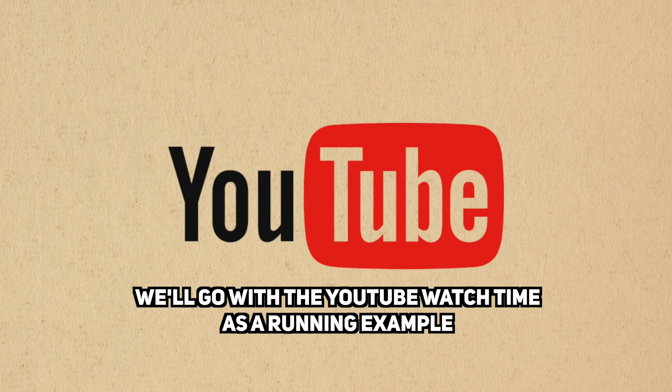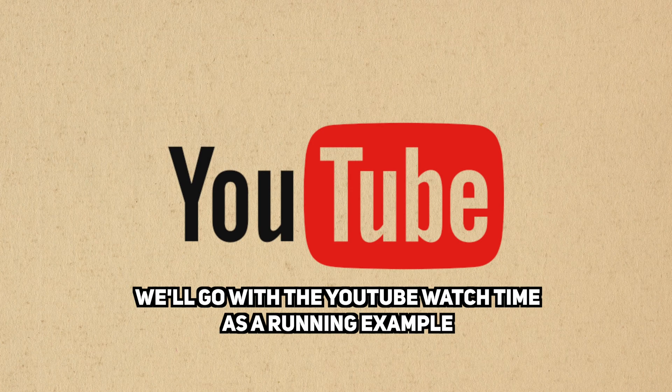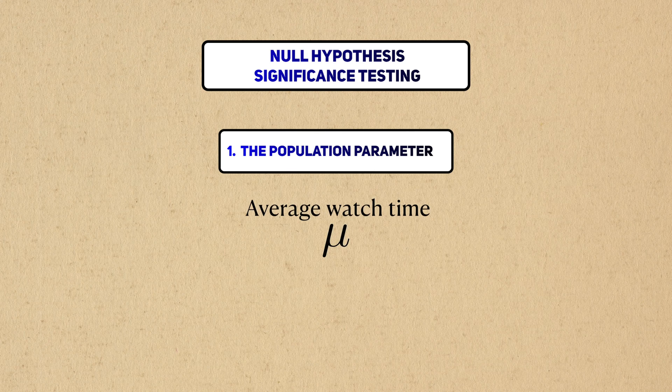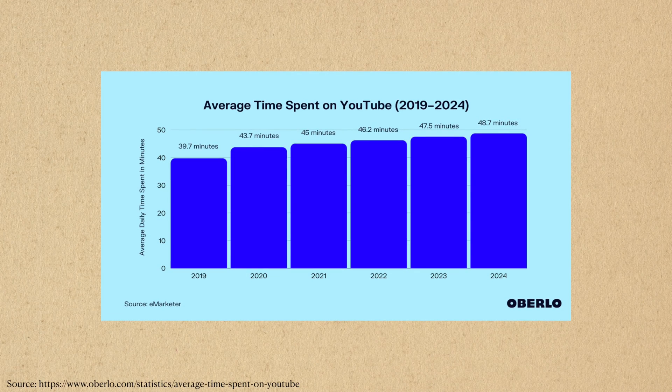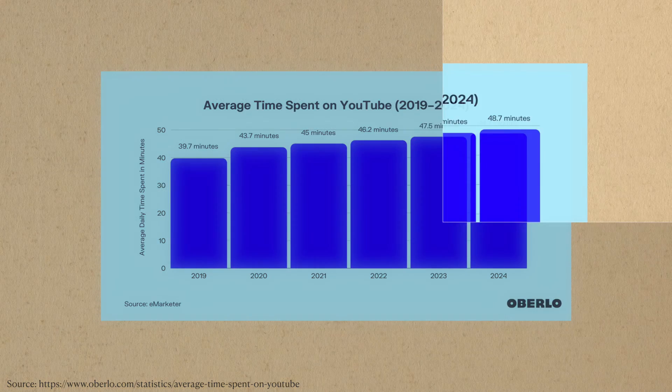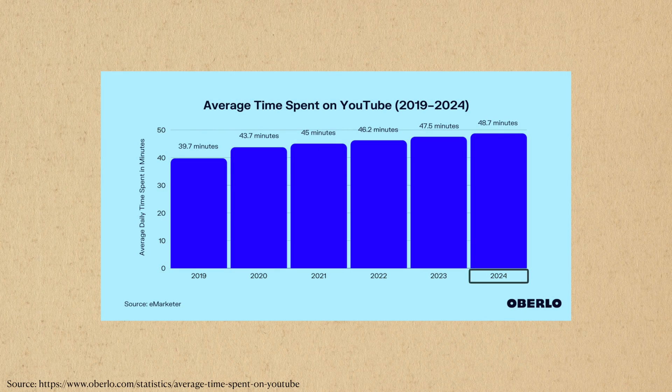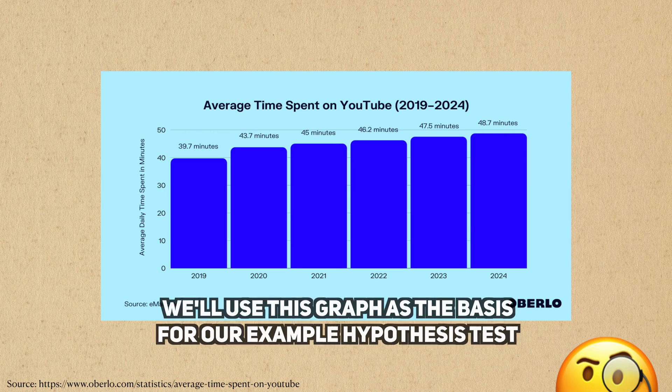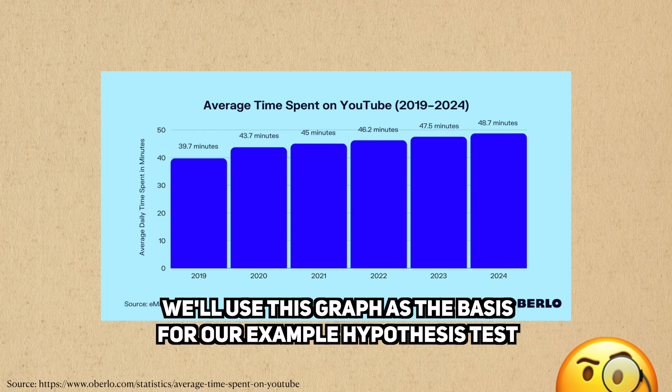We'll use the YouTube population as a running example for this video. In this case, our population parameter of interest is the average watch time. I came across an interesting graph about YouTube watch time a while ago. This analysis found that people watched YouTube for an average of 48.7 minutes in 2024. This is amazing to me because we haven't even started 2024 yet, and yet they already know what's happened. So let's collect some data and see if their analysis holds some water.